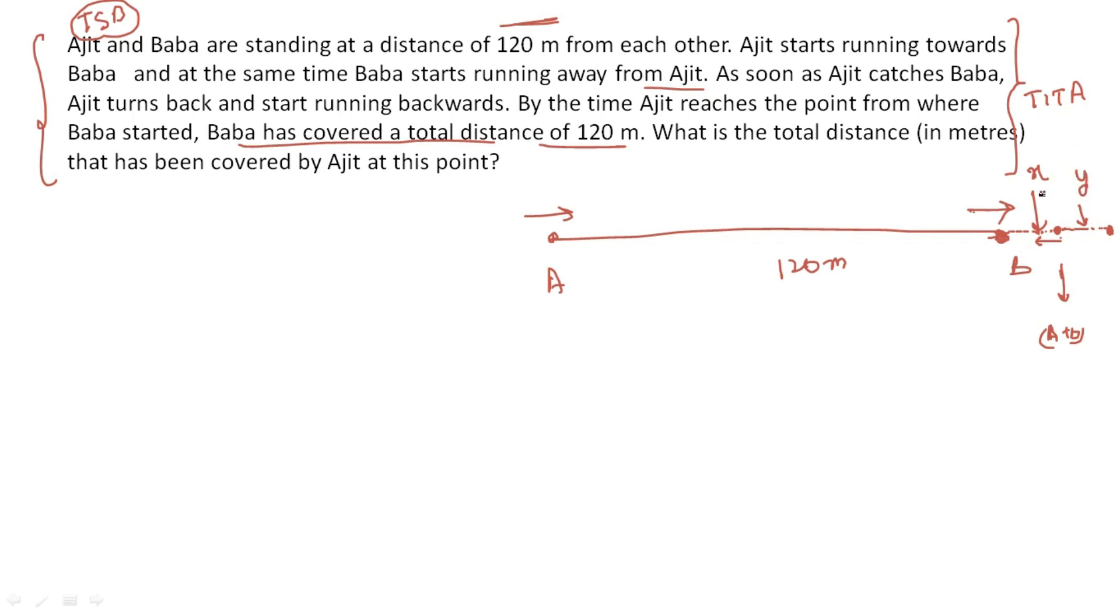Let's say Baba is somewhere here and this distance I am taking as y. We are given that x plus y is basically 120. This is also given that Baba's total distance when Ajit returns to that point, Baba has covered x and y and that is nothing but 120, which is given in the question.